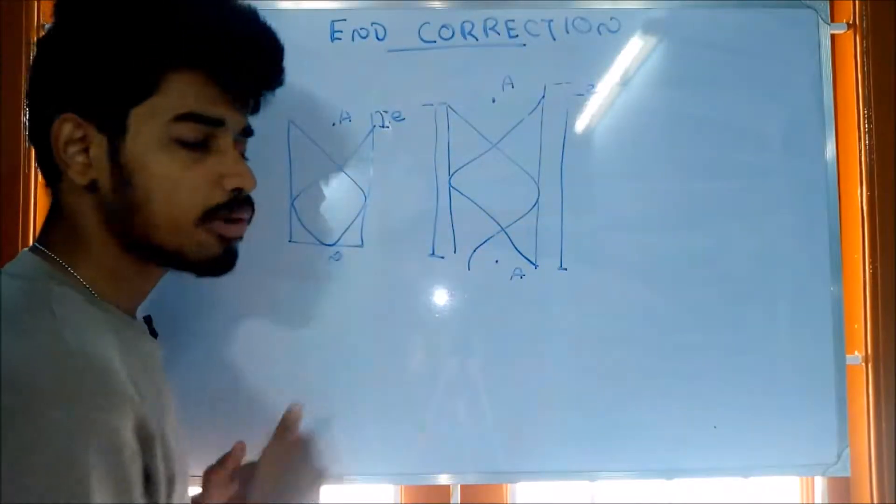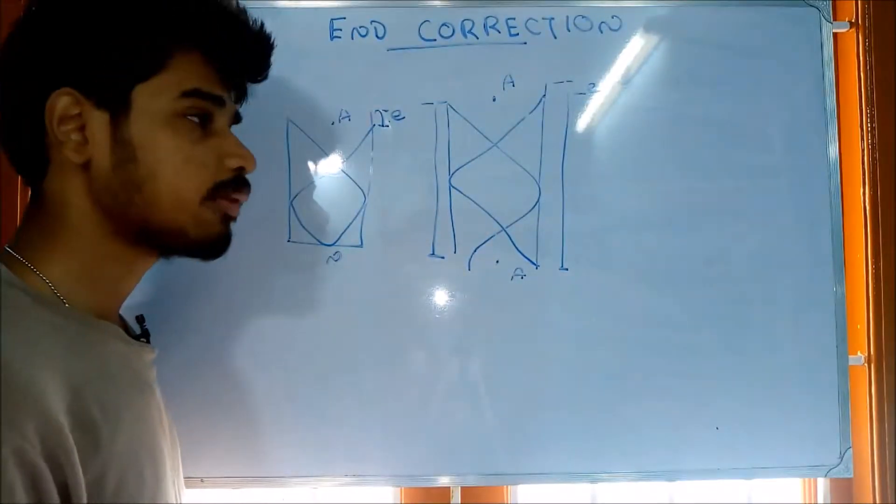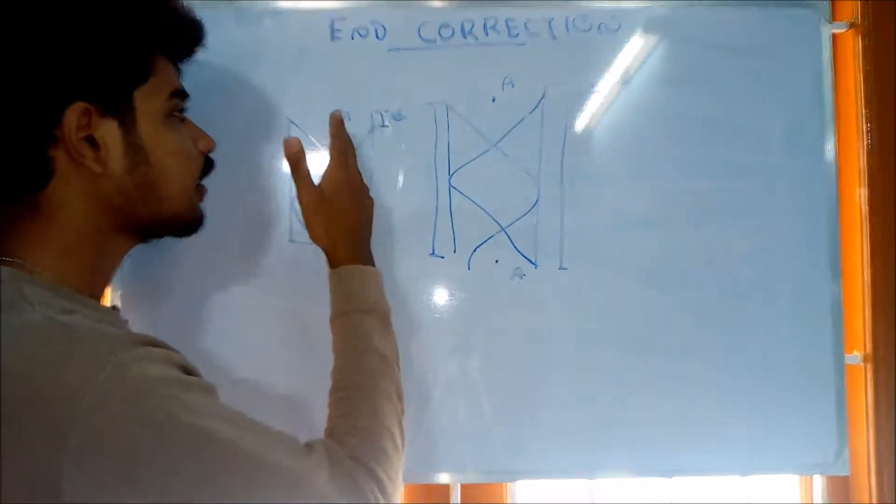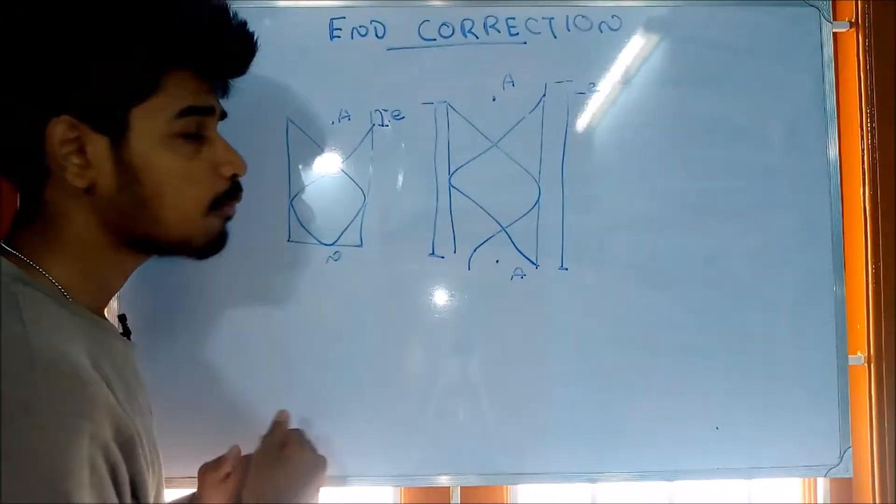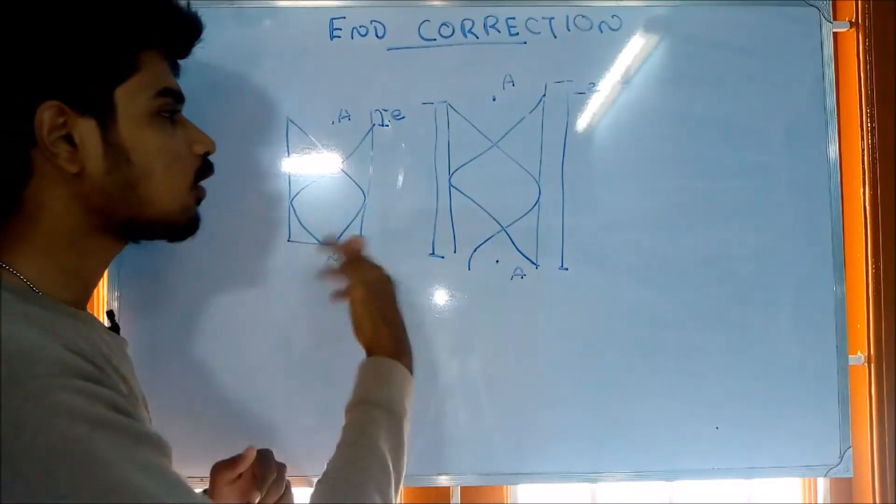There is also an open pipe. As you say, the end factors are like a finite momentum and you use the end nodes. As you say, the end nodes are like an antinode. The end of the hearing is 0.6R.